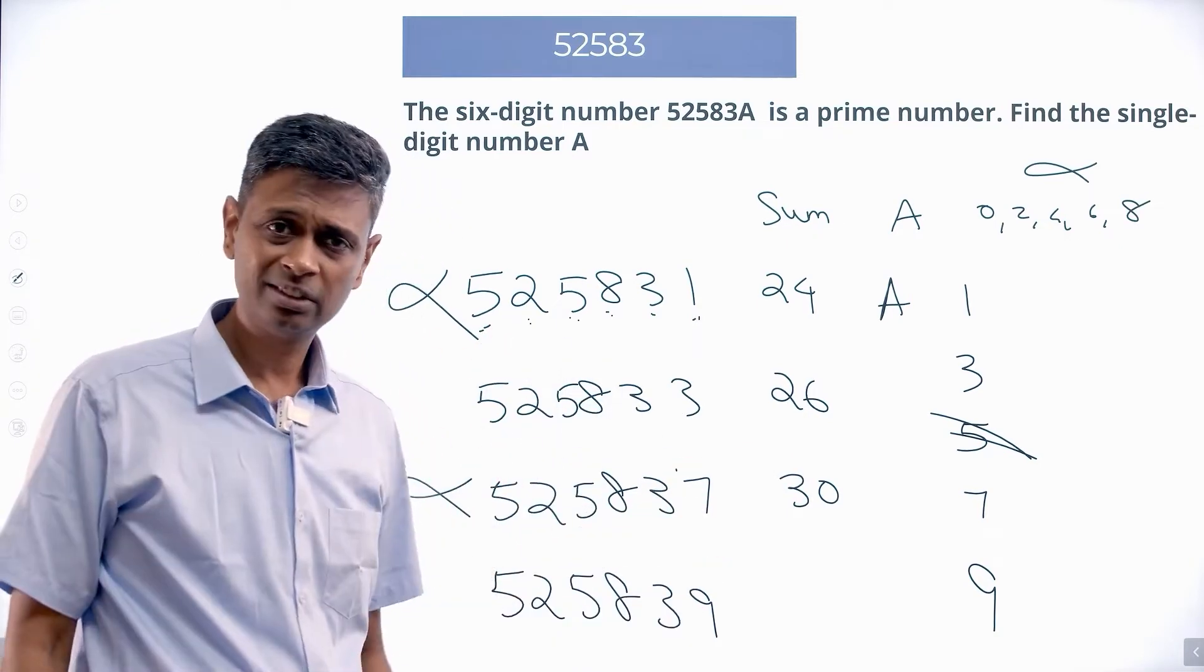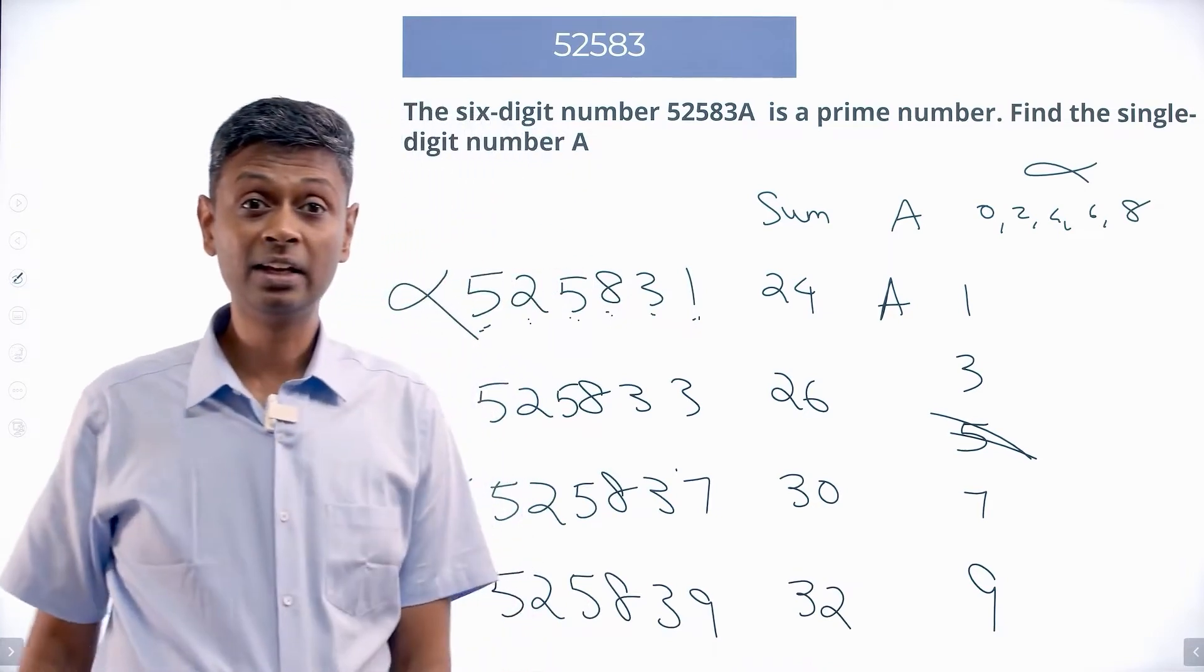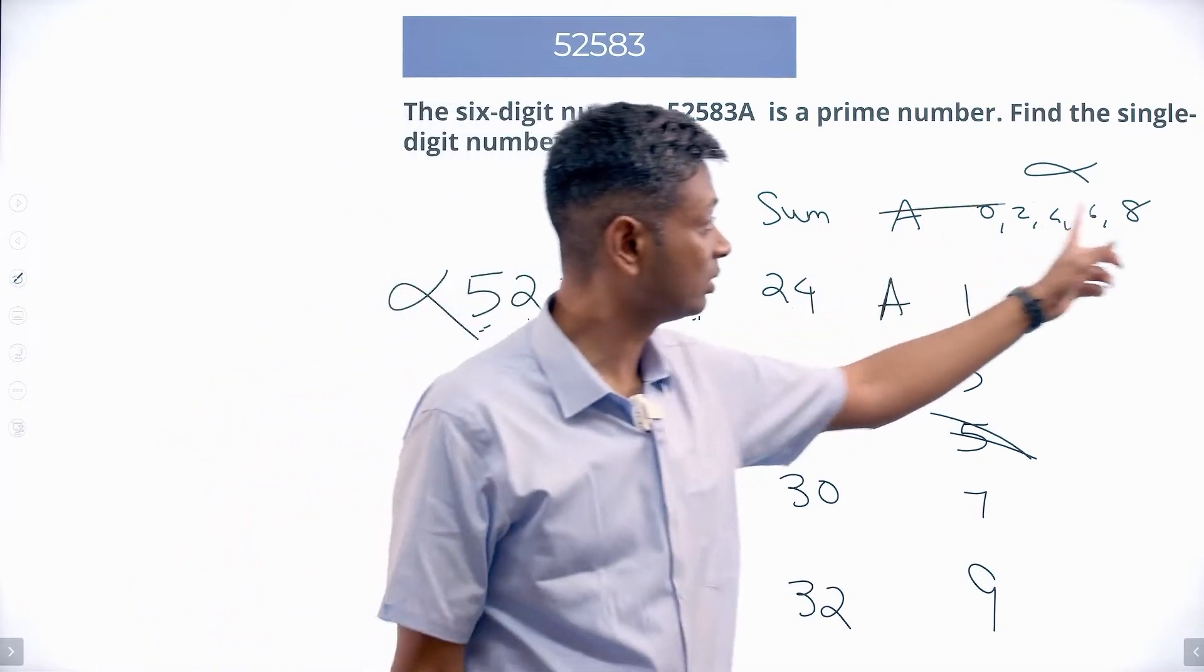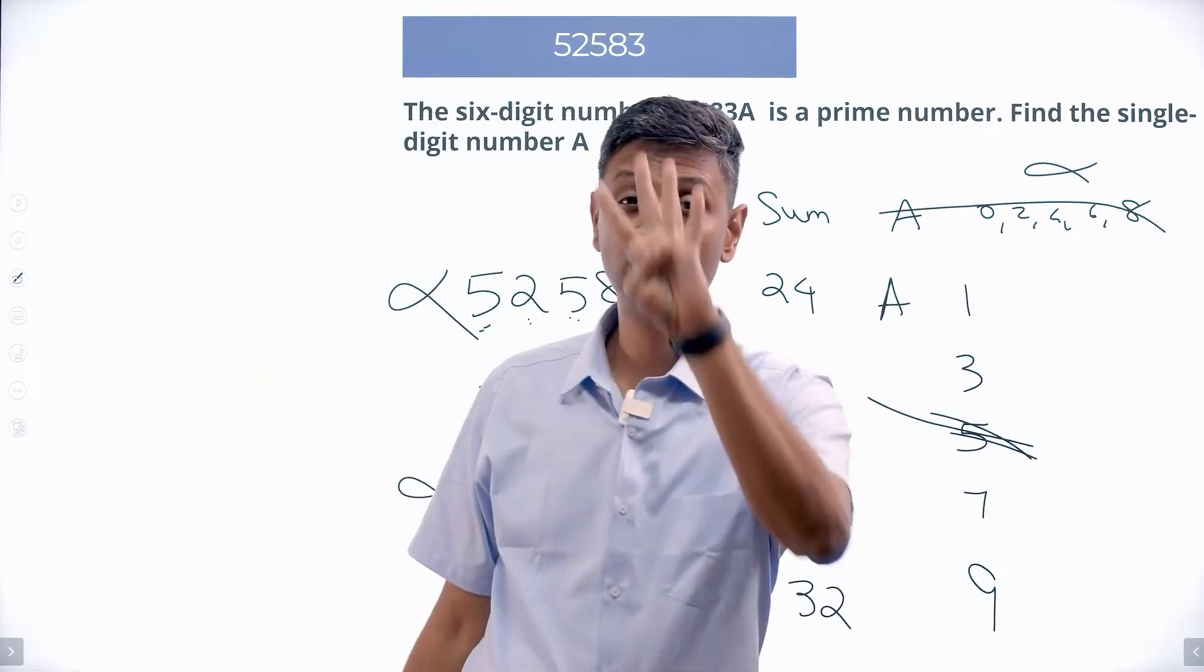Instead of 7, I put 9. This will be 32. Straight away, first thing, A is a digit 0 to 9. Five went off, I have only five remaining. This went off, I have only four remaining.